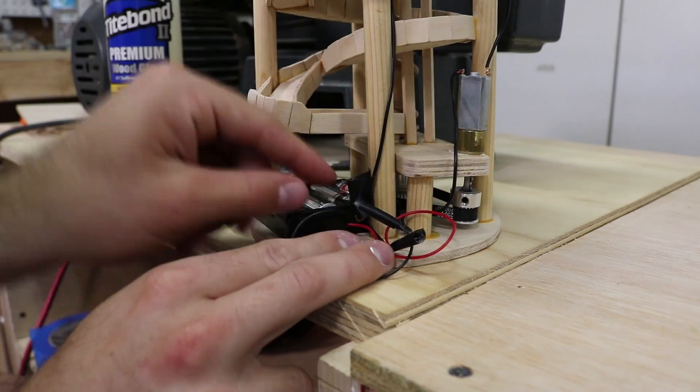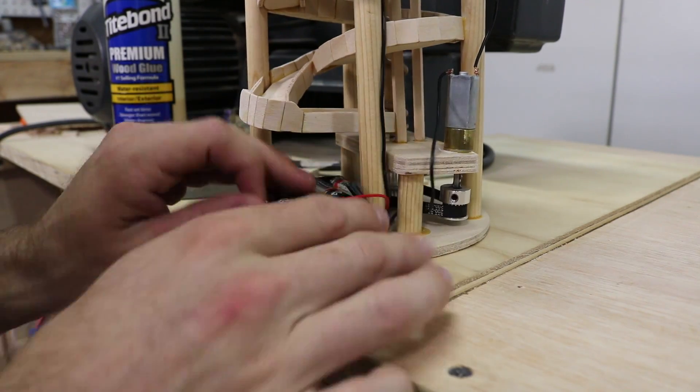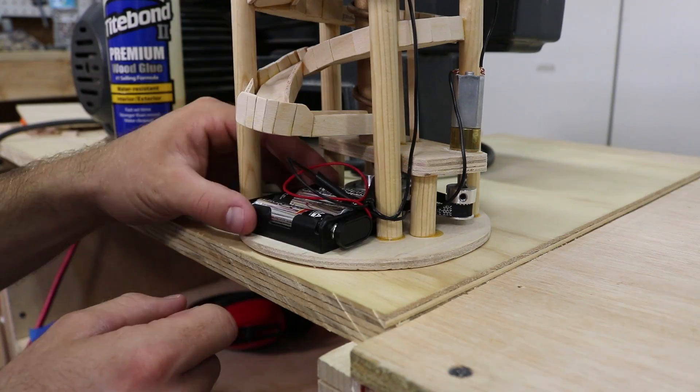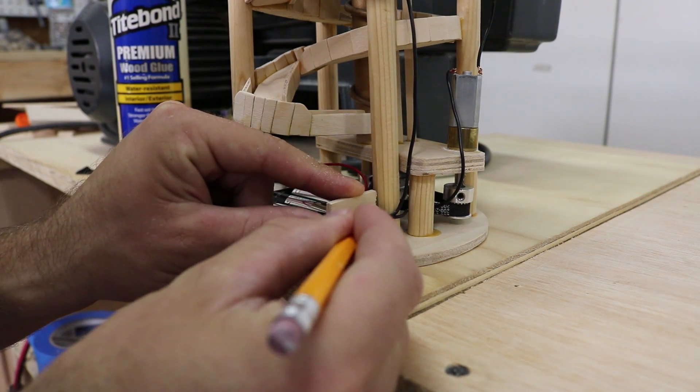Another thing I wanted to do to make the machine look better is build a box to hide the battery pack. I took off the tape that was holding the wires in place and started piecing together the box.